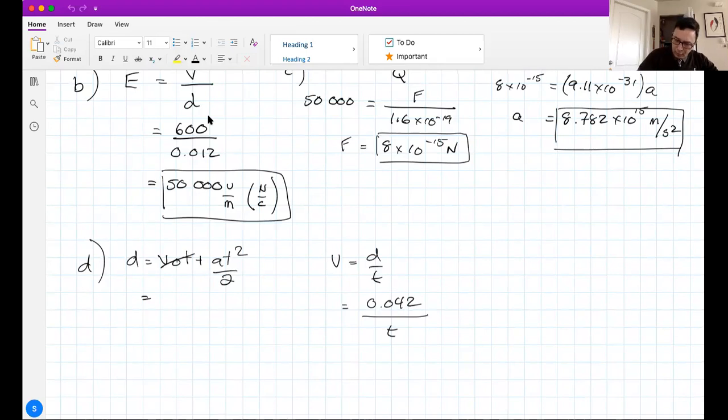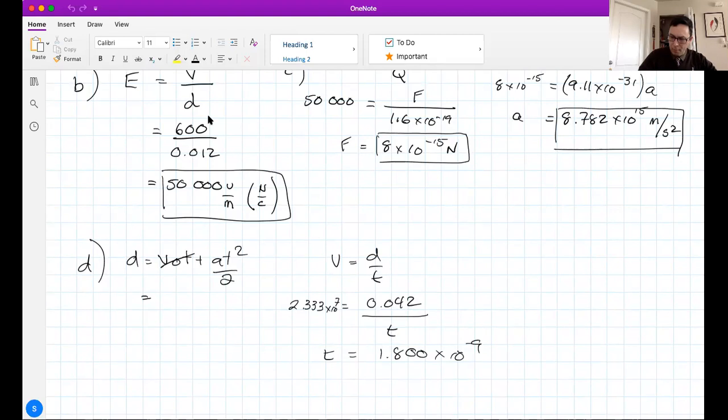T equals 1.8 × 10⁻⁹ seconds, billionths of a second. Really fast, because the electron's moving really fast. Now we're going to put that in here. That's our time.